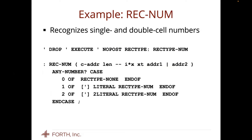The second example is rec-num, the part that does numbers — single and double cell numbers. There's the rec-type vector that tells you what the three behaviors are. The word that tries to evaluate numbers from the token — 'any number' — returns zero if it's not a number, one if it's a single number, two if it's a double number. Very easy to remember. In the case of a single number, if you're interpreting you just leave the stack, and that drop drops the execution token of the compiling word. Otherwise, you execute the compiling word and it compiles the literal into the definition you're compiling. And double kind of just does the same thing except it uses two-literal. Simple.